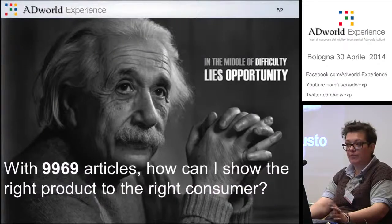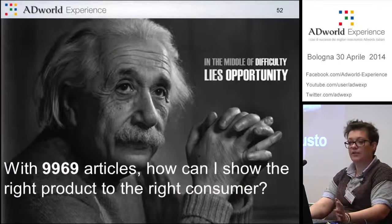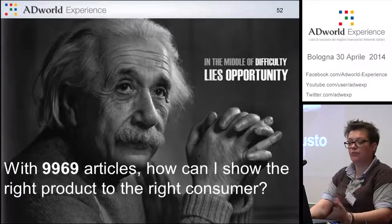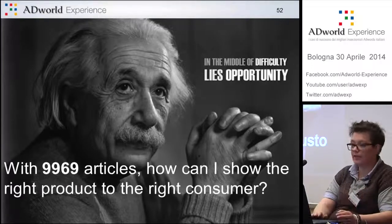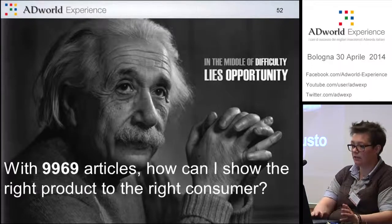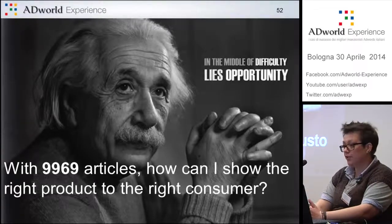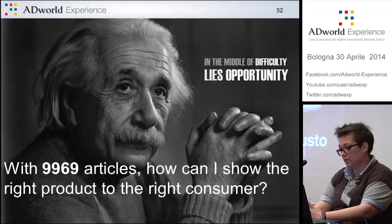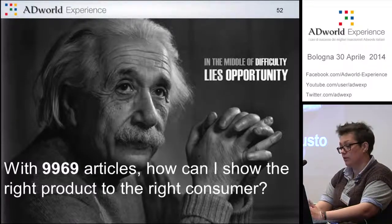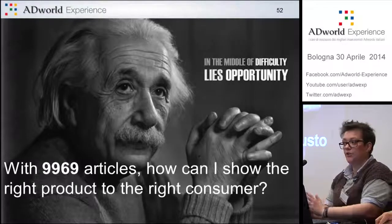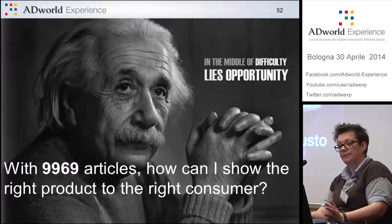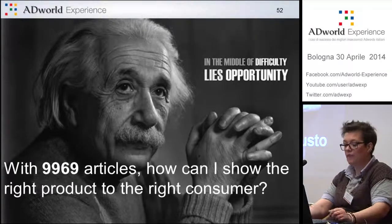There's a problem. This e-commerce includes 10,000 items. How can I know if a specific user had seen, for example, an entry-level camera or a very expensive camera? Clearly, we're talking about very different users.